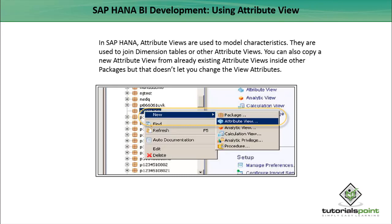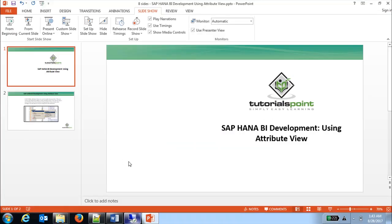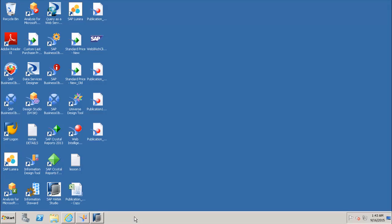We can also copy a new attribute view from an already existing attribute view inside other packages, but that doesn't let you change the view attributes. The attribute view in SAP HANA allows the joining of dimension tables and other attribute views. They are similar to the characteristics in BW and contain the master data.